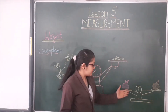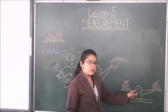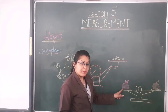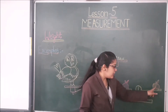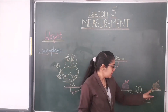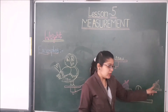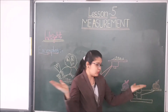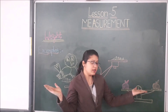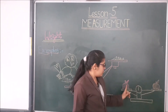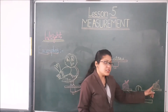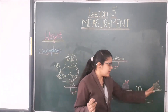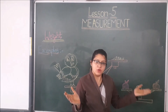Let's see one more example. Here one measuring scale is there — on this side one apple is there, and on that side one orange is there. Both sides are equal, so we can say the apple and the orange have the same weight.